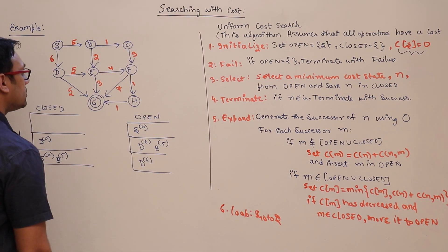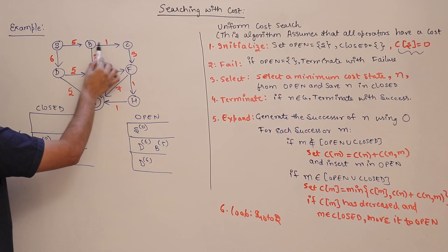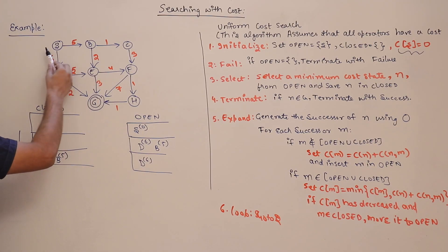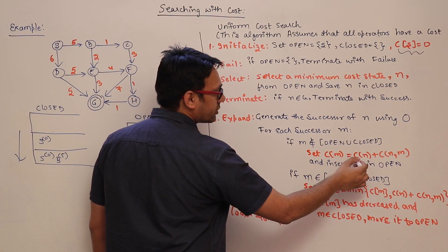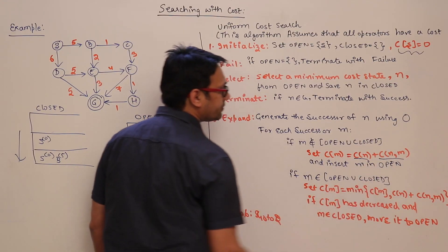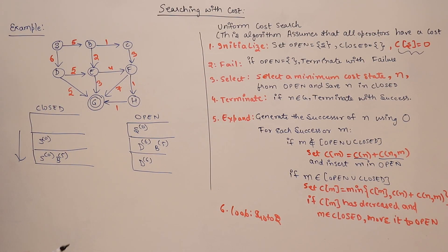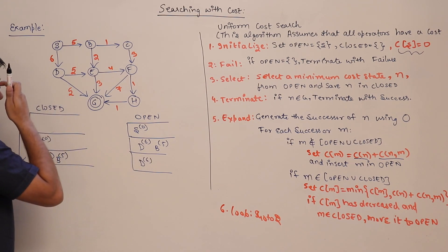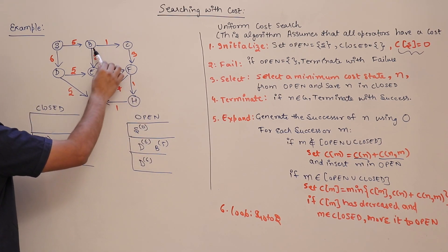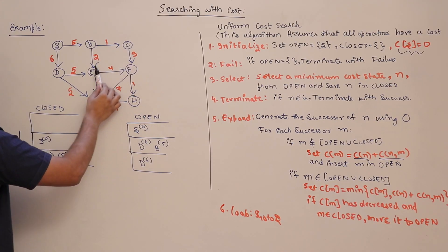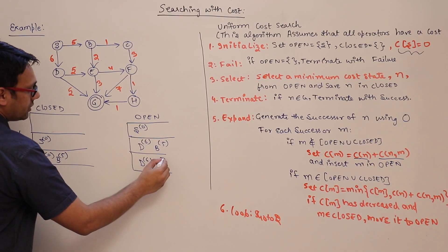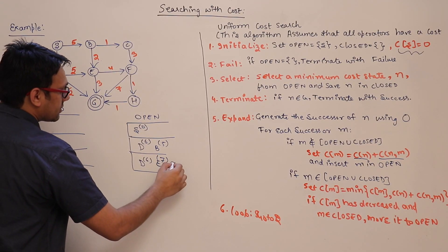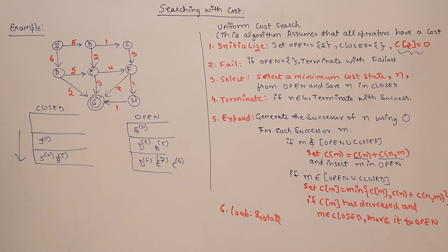Since B and C are not in open or closed, we insert them into open and update their costs. The cost of B is 5, so cost of C = 5 + 1 = 6 and cost of E = 5 + 2 = 7. Now open contains D(6), C(6), and E(7). Note that D and C both have the same cost of 6.